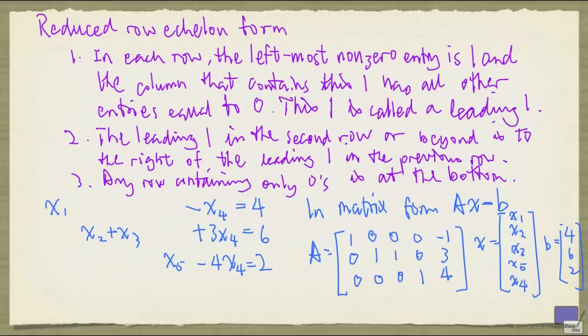And recall that the way you read off a solution is, for any variables that do not correspond to the leading one, you set them to 0, and then for the variables corresponding to the leading ones, you set them to the right-hand side values.